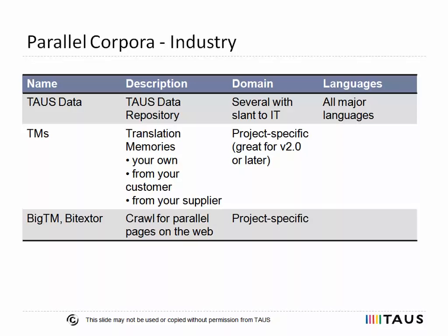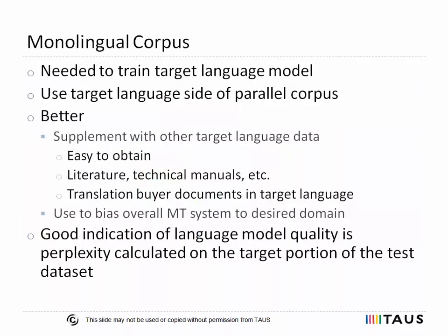An alternative strategy to get project-specific parallel corpora is to crawl multilingual pages on the web in order to get comparable corpora that can be further converted into parallel ones. The crawlers that can be used for that are BitexTM and Bitextor.